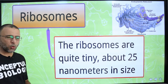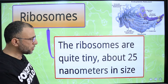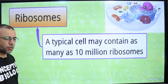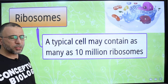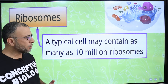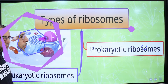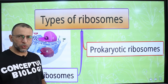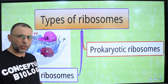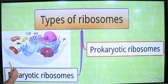Ribosomes are quite tiny, about 25 nanometers in size. A typical cell may contain up to 10 million ribosomes. Ribosomes are divided into two categories: prokaryotic ribosomes and eukaryotic ribosomes.